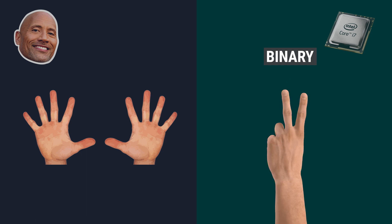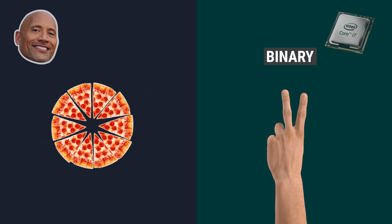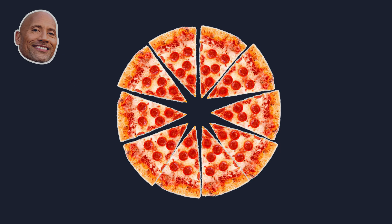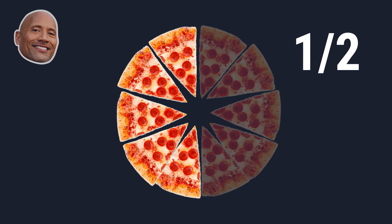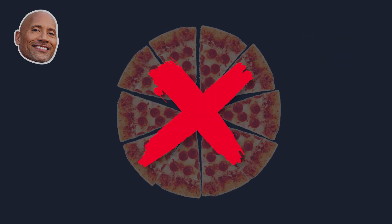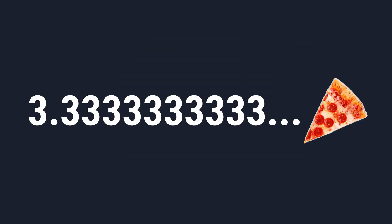To make this really simple to understand, let's replace the 10 fingers by 10 slices of pizza. Let's also replace the two fingers by a pizza split in half. Since we have 10 slices, it's super simple to divide by 2 and by 5. But it will be impossible to divide this exactly by 3, because this will give you infinite decimals.